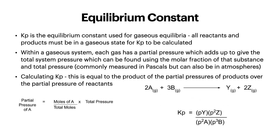Looking at the equilibrium constant: Kp is the equilibrium constant used for gaseous equilibria. All reactants and products must be in a gaseous state for Kp to be calculated. Within a gaseous system, each gas has a partial pressure which adds up to give the total system pressure, found using the molar fraction of the substance and total pressure — commonly measured in pascals but can also be in atmospheres. When calculating Kp, this is equal to the product of the partial pressures of products over the partial pressure of reactants. You can see the equations and how they apply, and on the right-hand side how it would look for an actual reaction.